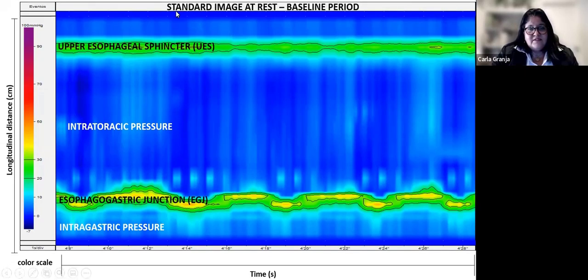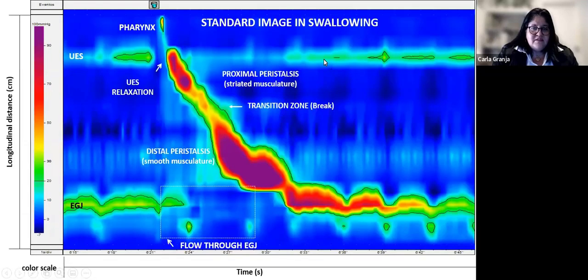Here we can see the standard image at rest with the baseline period. In the proximal part of the graphic, we see the pressure impression of the upper esophageal sphincter. And in the distal part, we can see the pressure impression of the esophagogastric junction that respects the oscillation of the respiratory sequence.